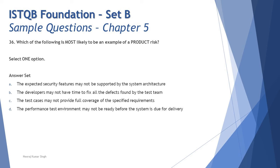Option B says: the developers may not have time to fix all the defects found by the test team. This is impacting the process and the release schedule — it's about what happens before delivery. If the development team cannot fix all issues, that's a process impact; we may not complete the product on time. This is a project risk.